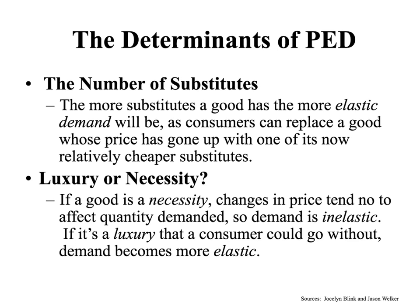The first determinant of whether something will be inelastic or elastic is the number of substitutes. The more substitutes a good has, the more elastic the demand will be — more substitutes equals more elastic — as consumers can replace a good whose price has gone up with one of its now relatively cheaper substitutes.